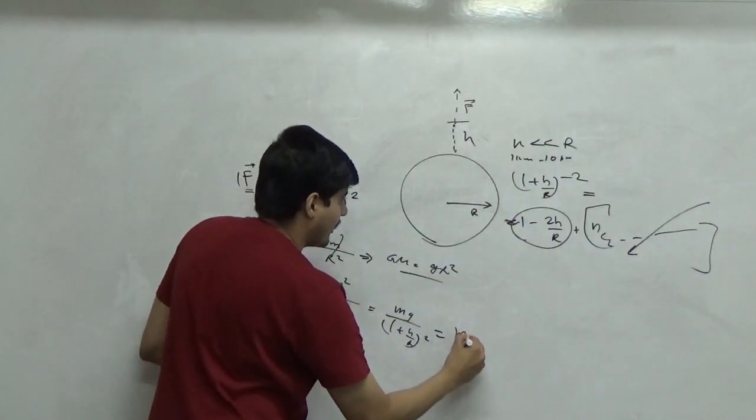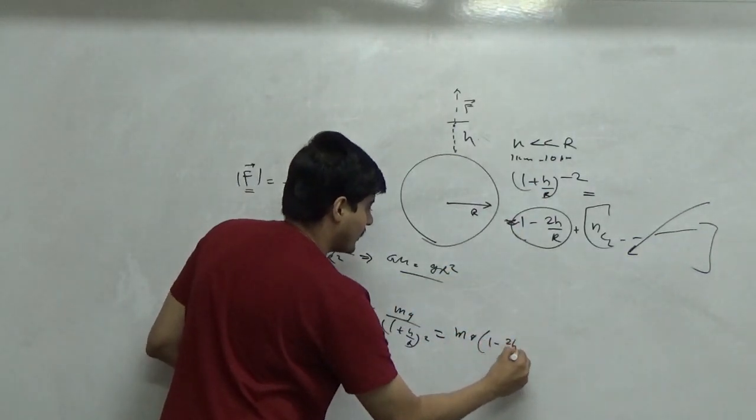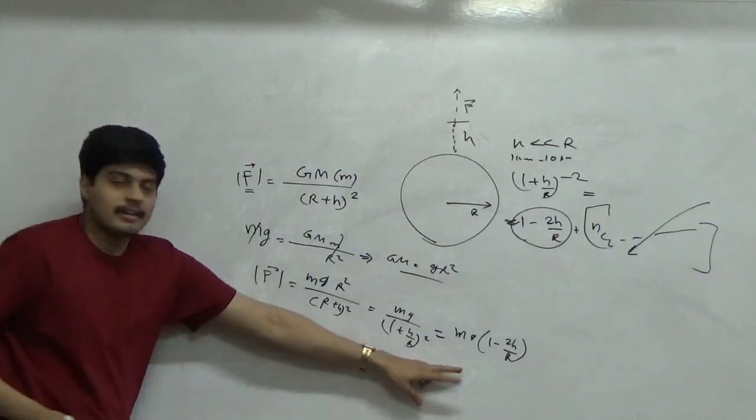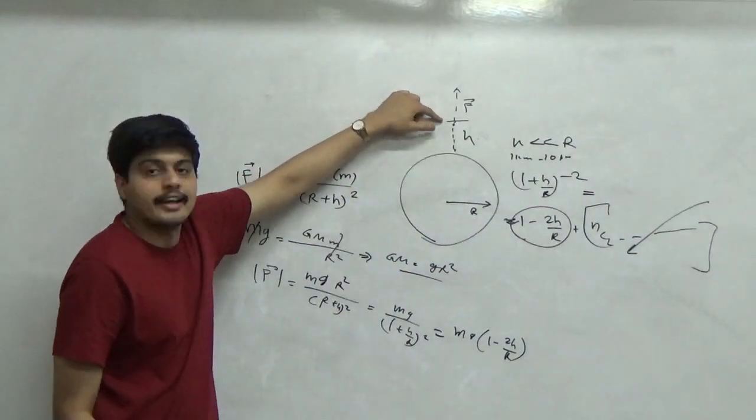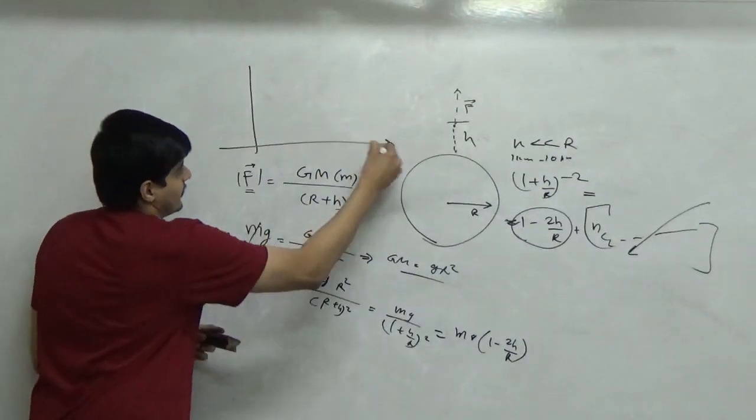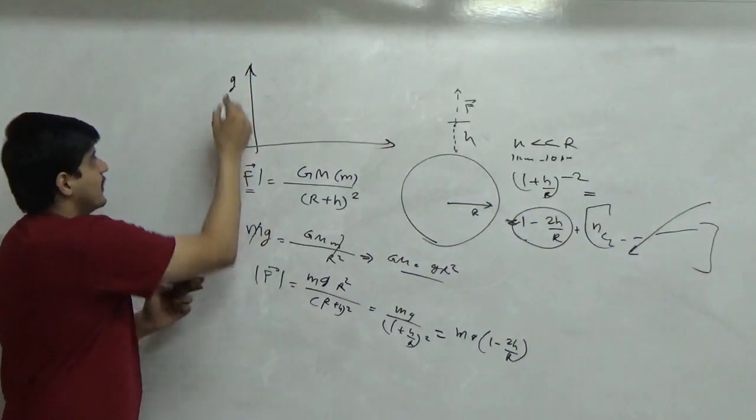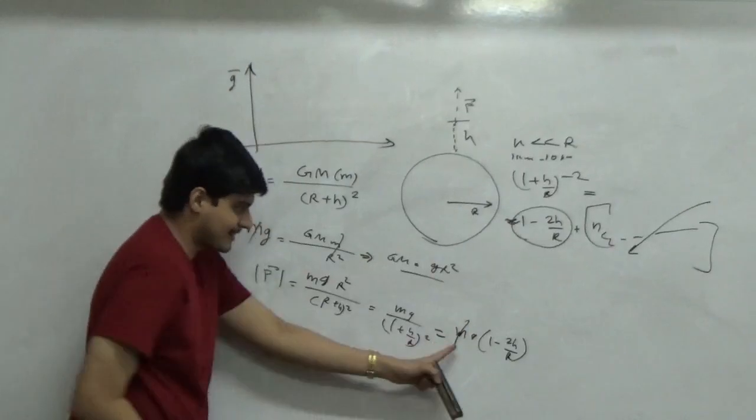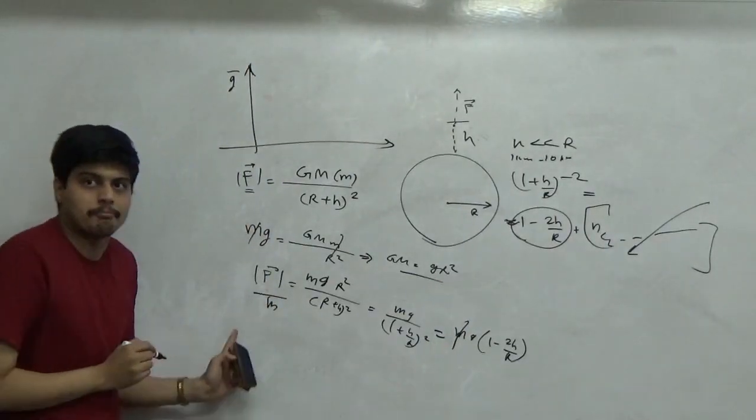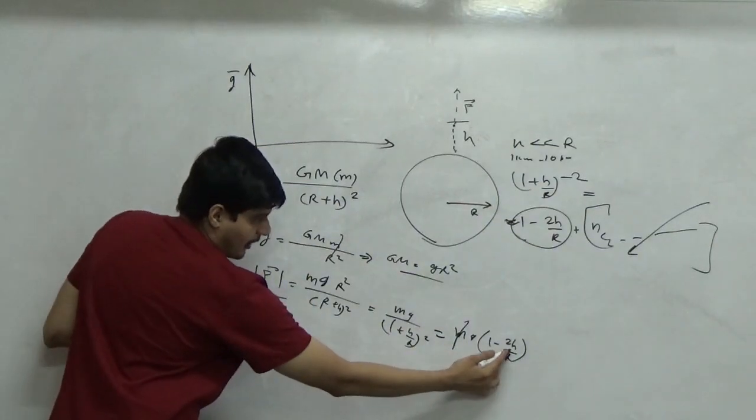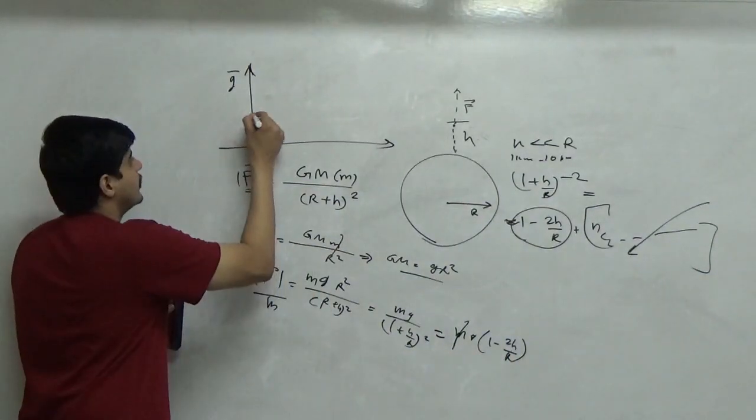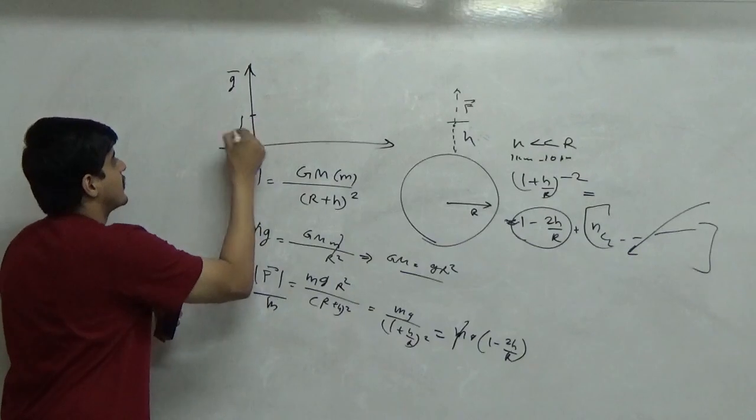Substituting it here I get mg(1 minus 2h upon r). This is the simplified expression for an object at height h. So if I try to plot this now, the acceleration g - I simply can take this out if I'm looking at it as f by m bar, the acceleration. At r, h equal to 0, of course I get g.